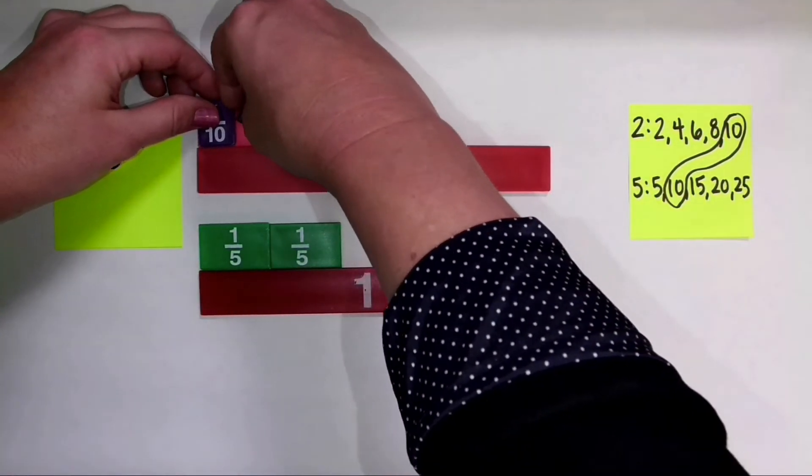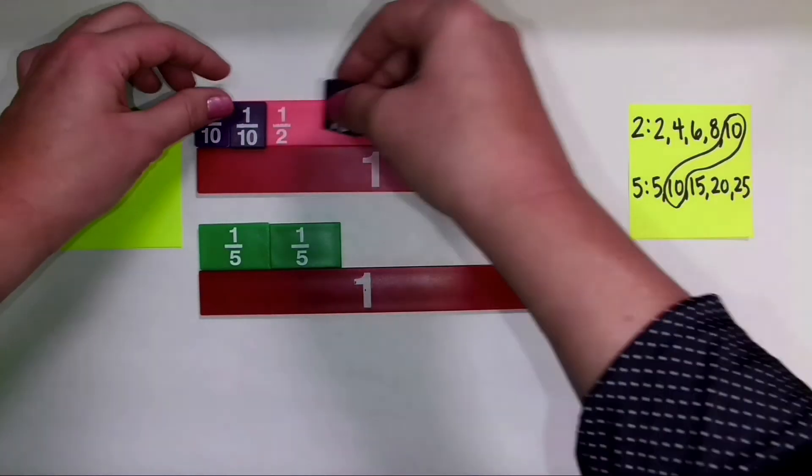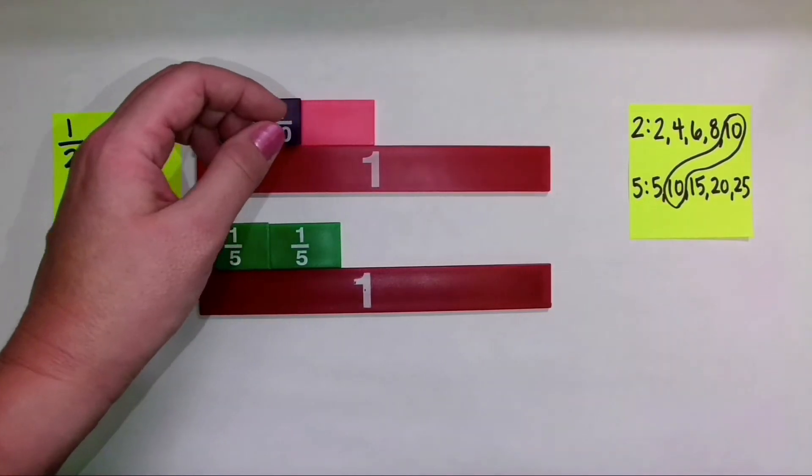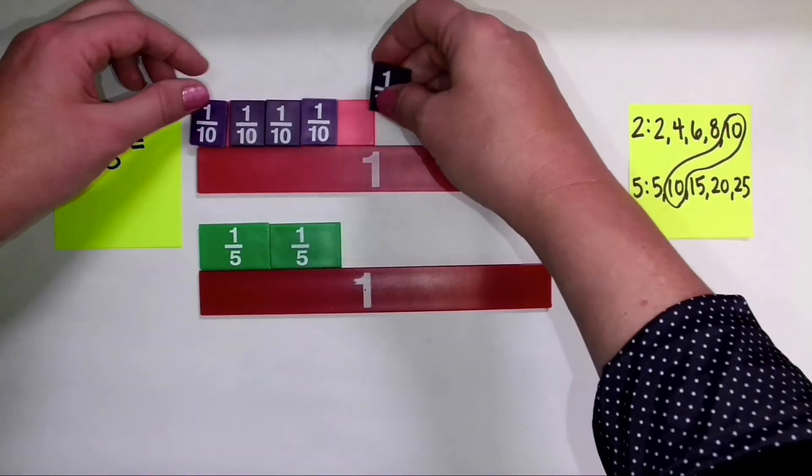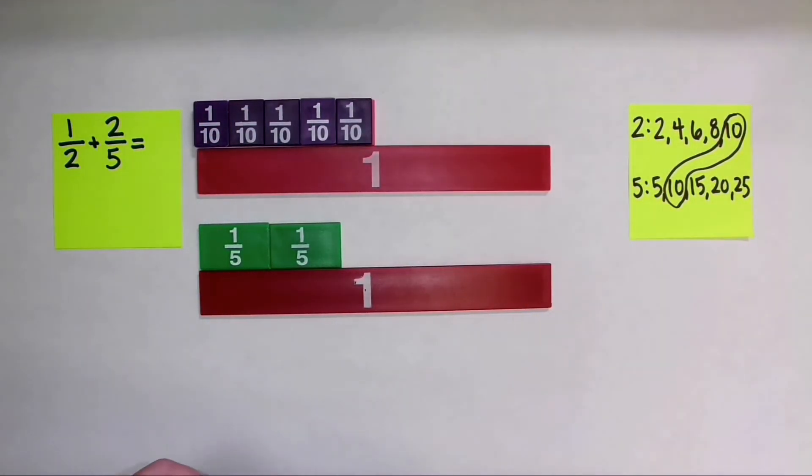So I've got my 5 one-tenth pieces, and I like to place them directly on top of the 1 half to show that now 5 tenths is equivalent to 1 half.